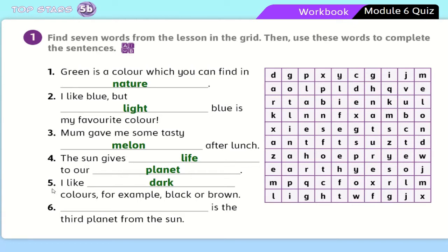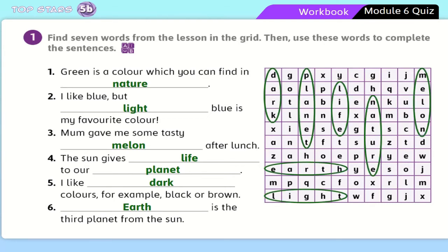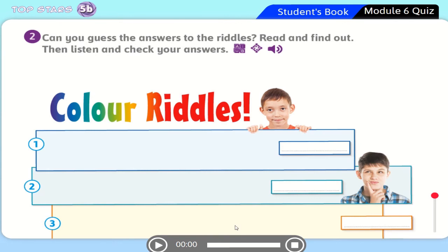Dark colors, for example black or brown. Number six: Earth is the third planet from the sun. In the word search puzzle you can find all the words: melon, nature, life, planet, dark, earth, and light. Good job!